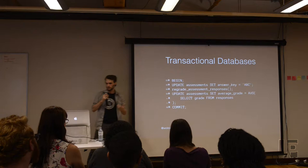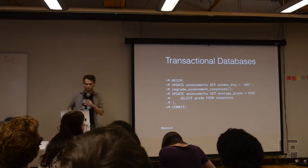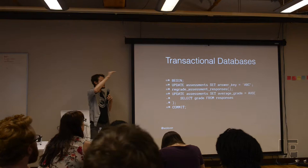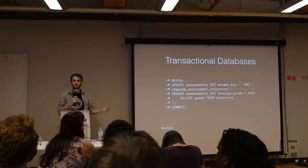This is an example of updating that assessment's answer key: the first line updates the bubbles, then we recalculate all the students' grades, and then recalculate the assessment's average mark. The BEGIN and END signal to the database that this is a transaction, so everything needs to happen or everything needs to fail. For example, if the database crashes halfway through recalculating the student grades, we don't even want the answer key to be updated — we want everything to fail.